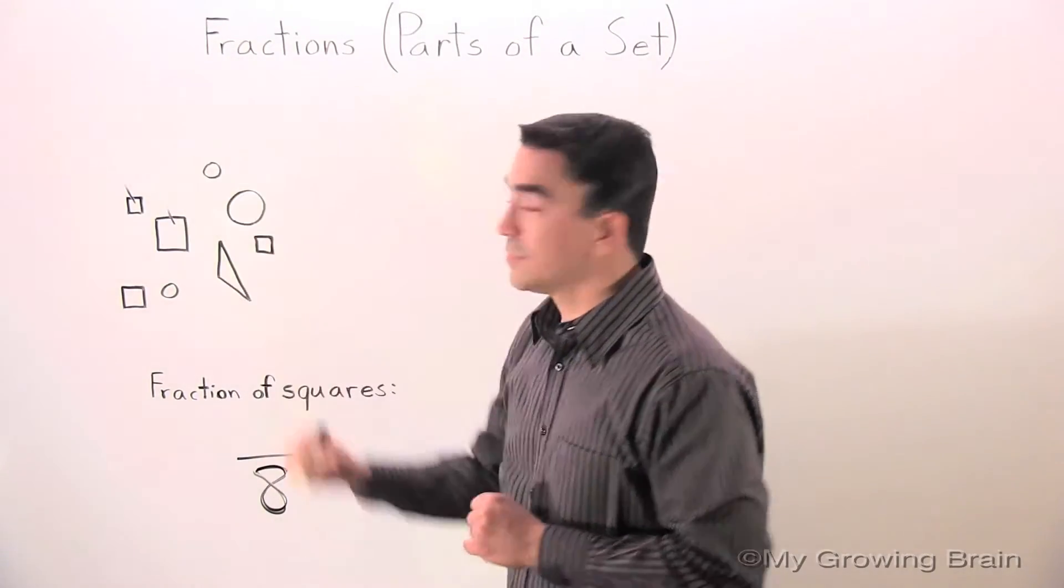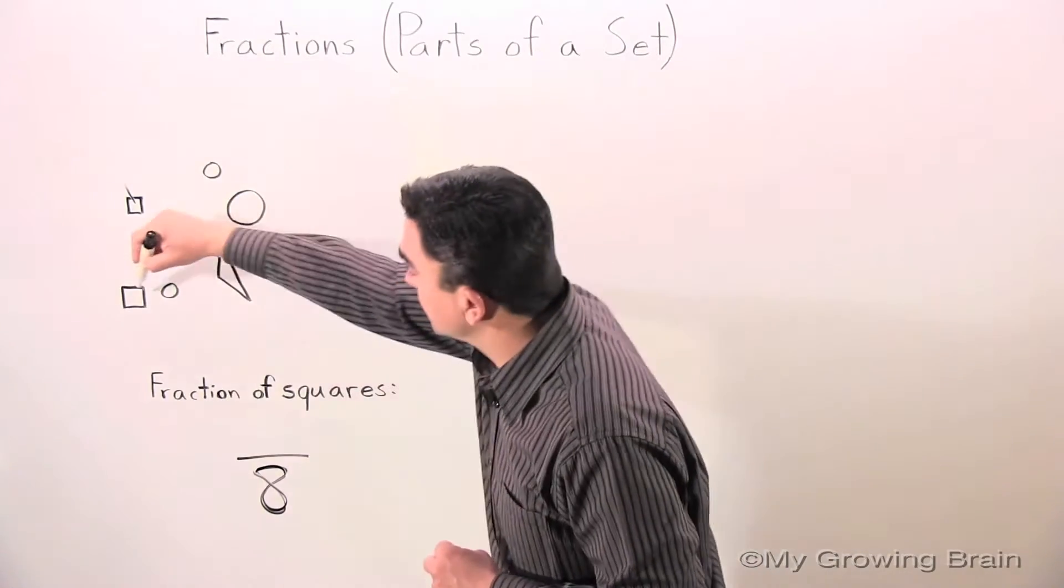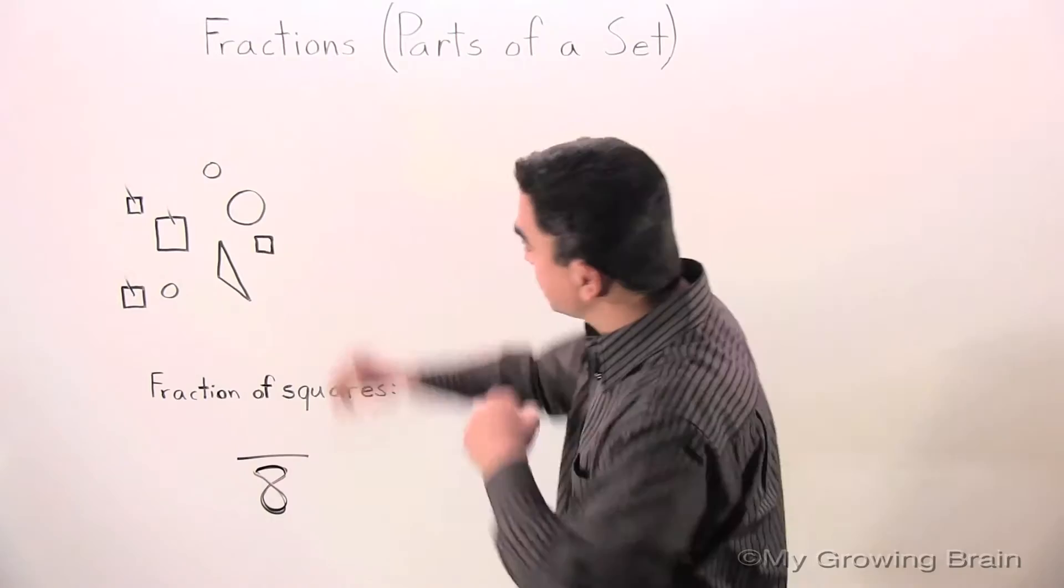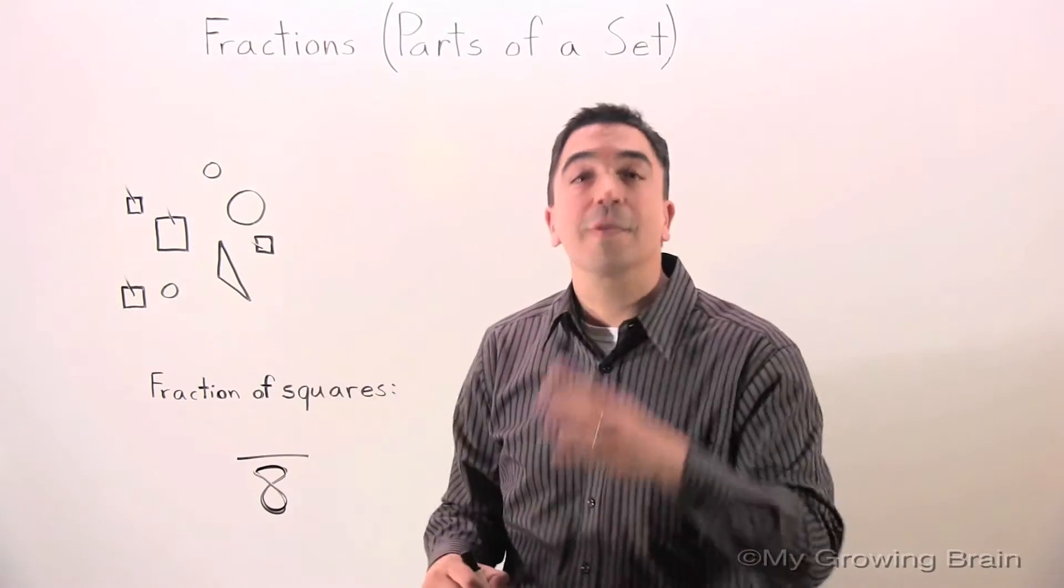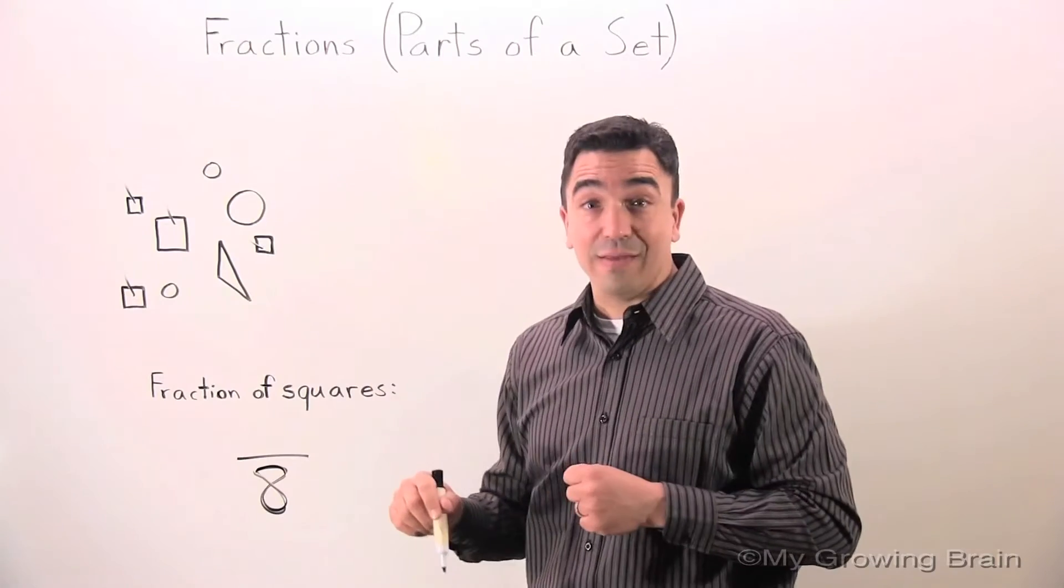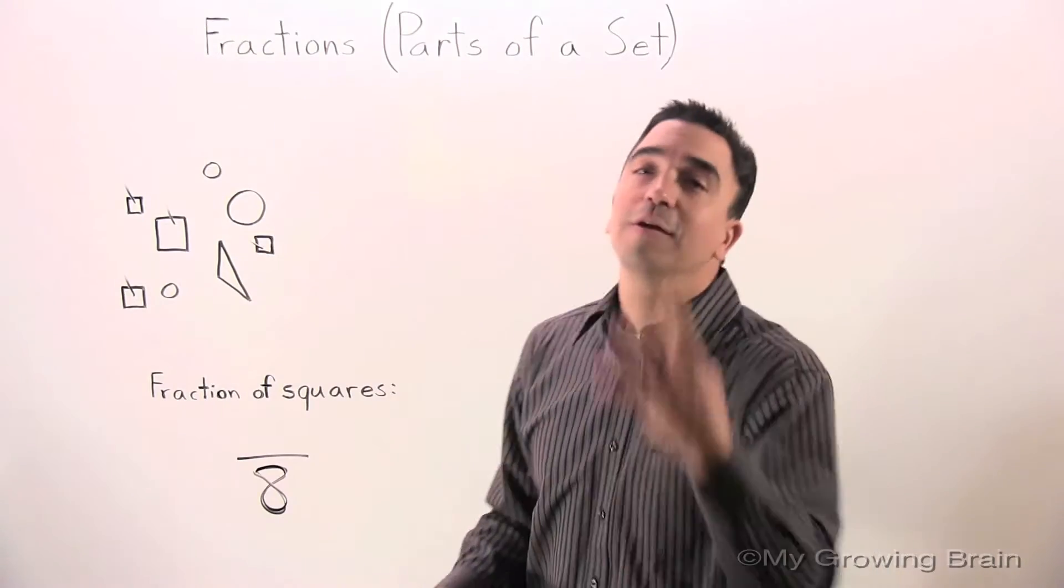1, 2, 3, 4. There are 4 squares in this set. So, therefore, our numerator is 4.